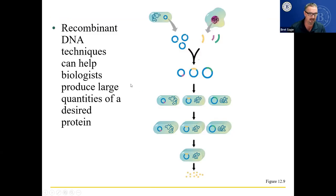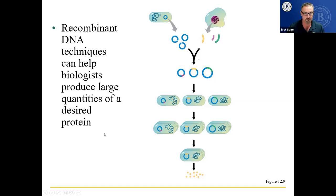Recombinant DNA techniques can help biologists produce large quantities of a desired protein. For example, you take three different bacterial plasmids, incorporate three different genes, put each into a separate bacterial line, and whichever one produces the desired protein, you isolate that bacterium and grow it in large quantities.